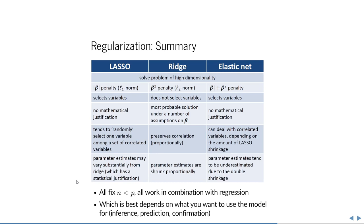Parameter estimates from lasso can vary substantially from ridge. Use ridge if you don't need variable selection, since it has mathematical justification. If you need variable selection and variables are strongly correlated, use elastic net. If there isn't strong correlation and you want variable selection, use lasso. Elastic net has two different penalties, which can sometimes result in underestimation of parameters because the penalty becomes too large — there are ways to correct for this.